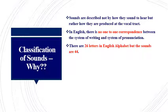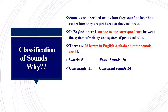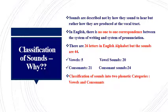As we all know, there are 26 letters in the English alphabet but the sounds are 44 in number. There are 5 vowels in the English alphabet but when we count the vowel sounds they are 20 in number. The same is with consonants — in the alphabet there are 21 letters categorized as consonants, but when consonantal sounds are counted they are 24. So the classification of sounds into just two phonetic categories is not sufficient.